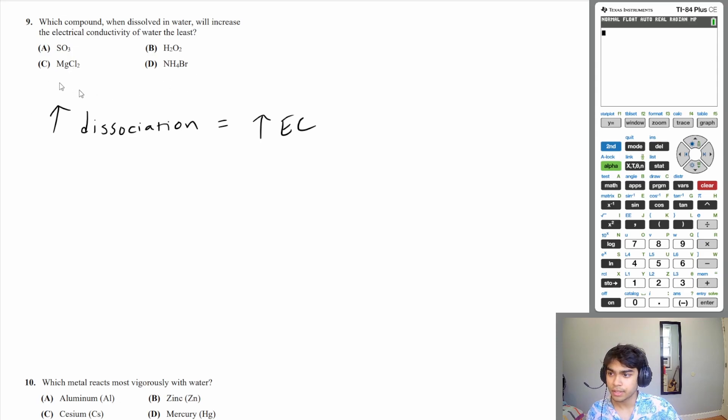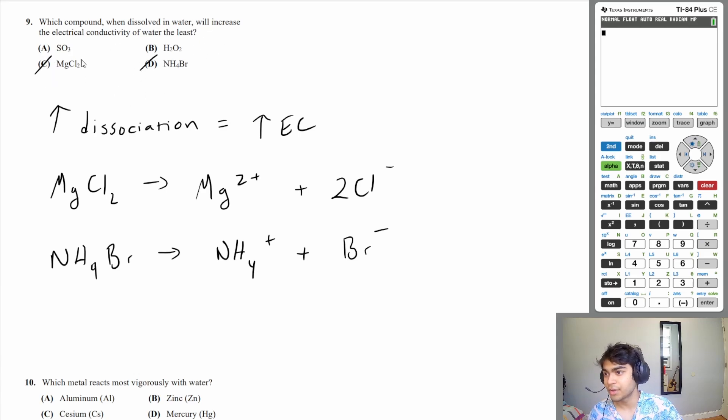So whichever compounds dissociate a lot are going to increase the electrical conductivity a lot. So we're looking for the compound that will dissociate the least. There are two answer choices that we can get rid of basically immediately. That's going to be C and D. Magnesium chloride and ammonium bromide are both ionic. So magnesium chloride is just going to dissociate into the magnesium ion and the two chloride ions. And then ammonium bromide is going to do a similar thing, dissociate into the ammonia molecule, the ion and the bromine ion. So these two are going to dissociate a lot. Therefore, they're going to increase the electrical conductivity a lot.